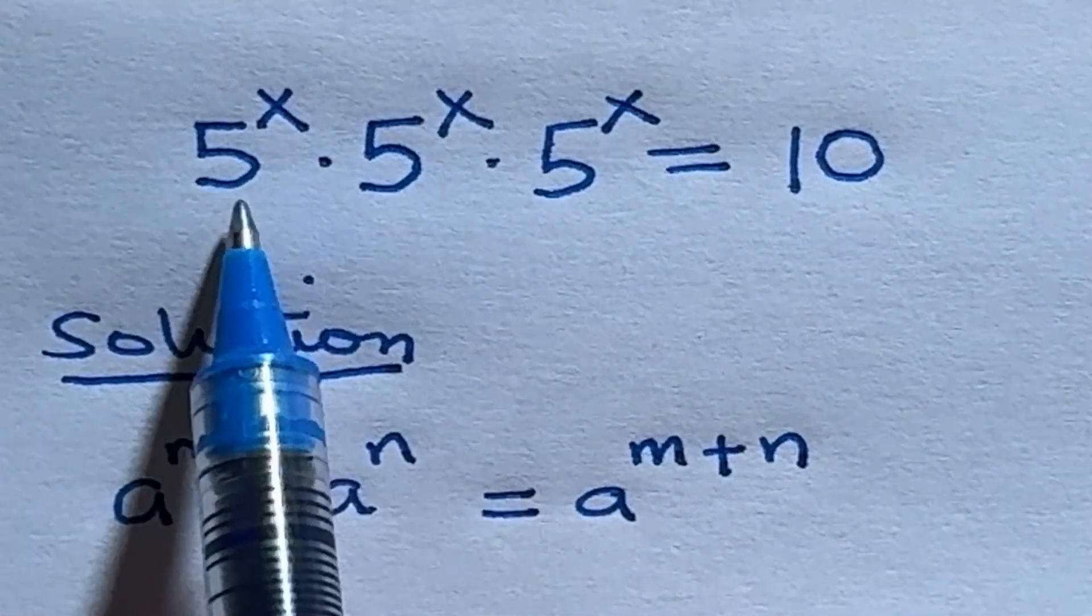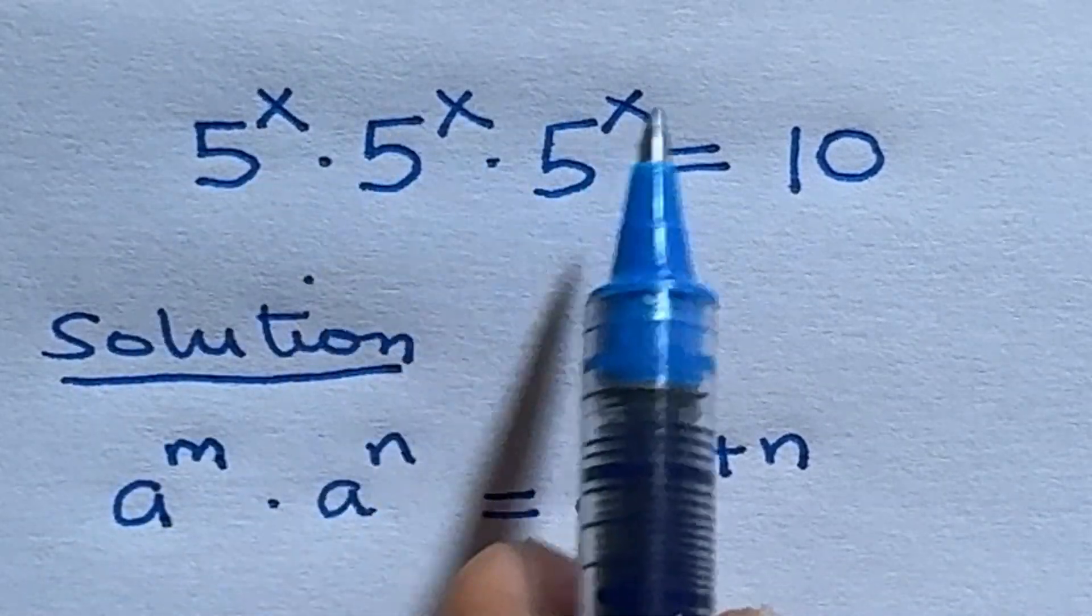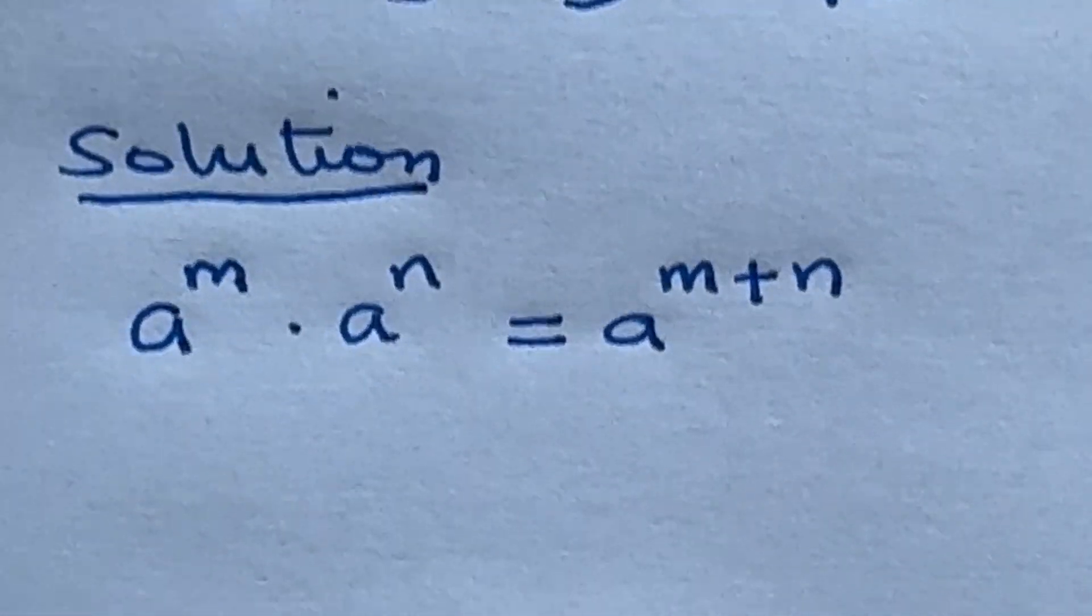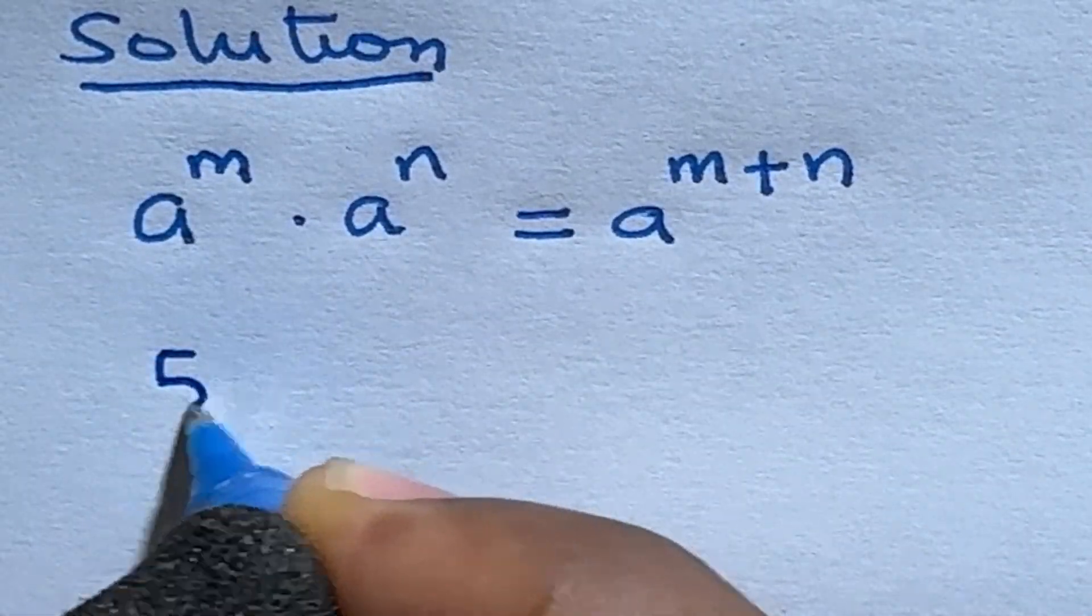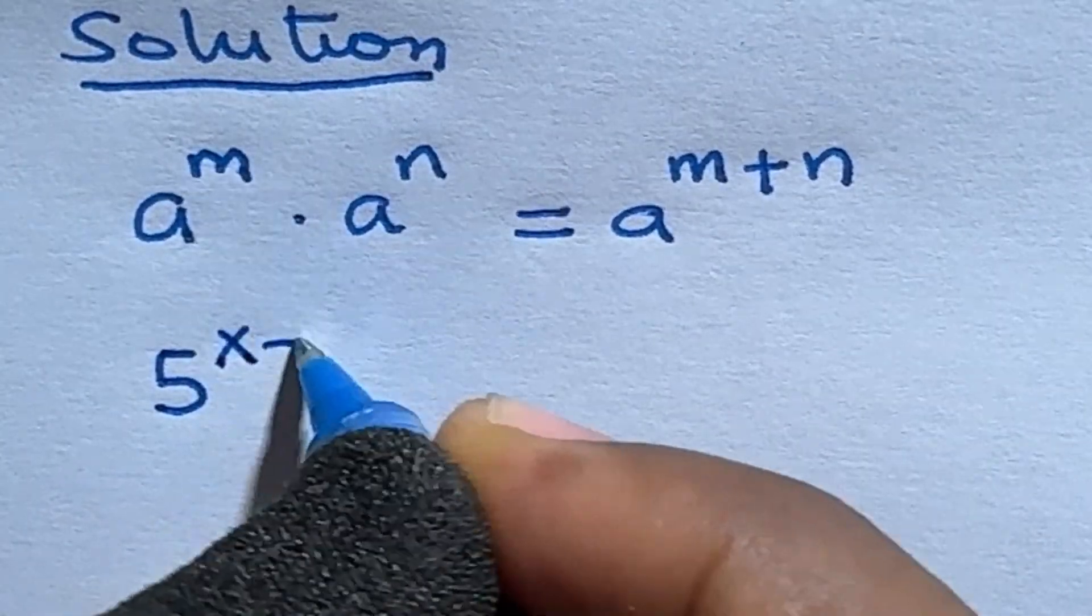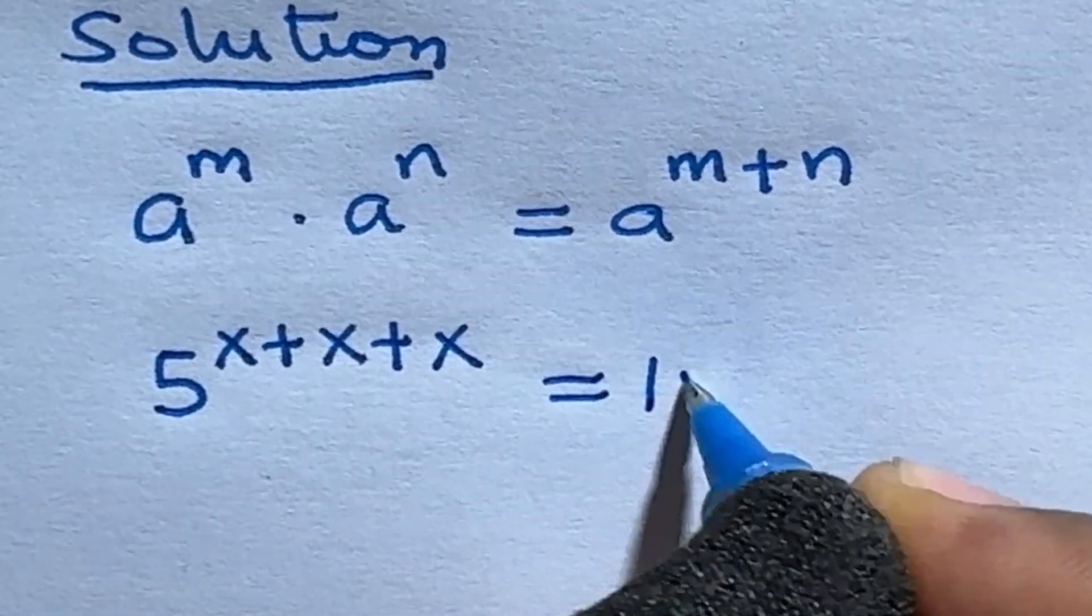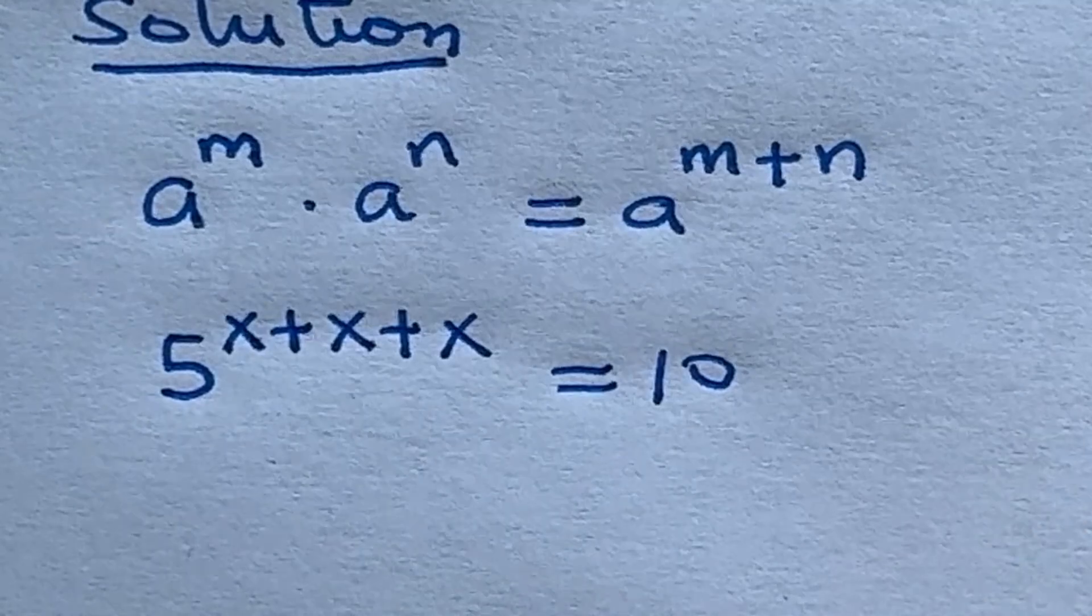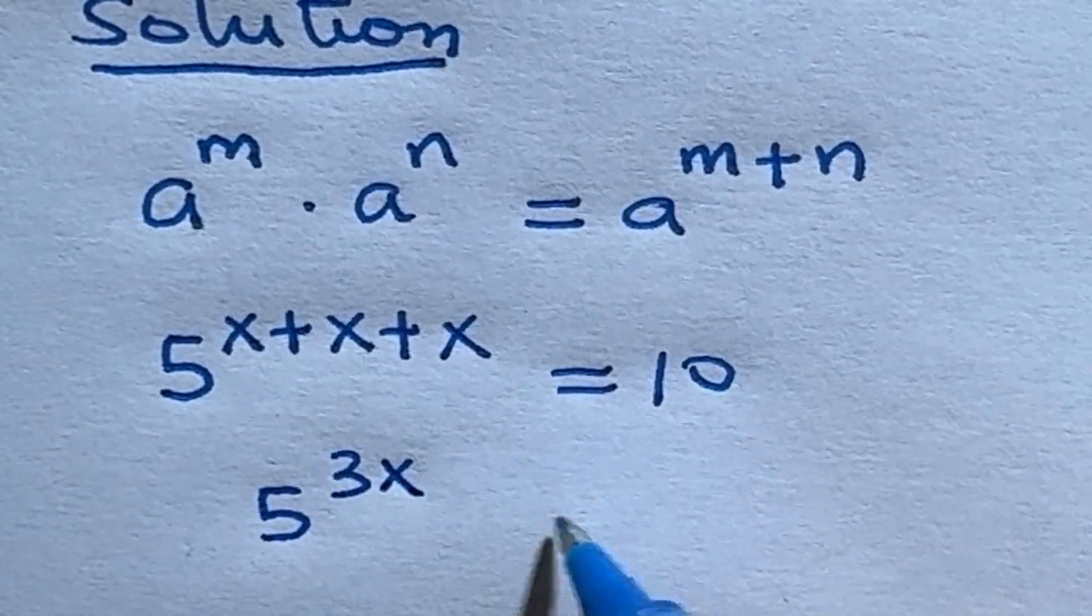So to apply these laws, we'll pick 5, which is the base, and then add the powers x, x, x together. This will then give us 5 raised to power x plus x plus x equal to 10. This is 5 raised to power 3x equal to 10.